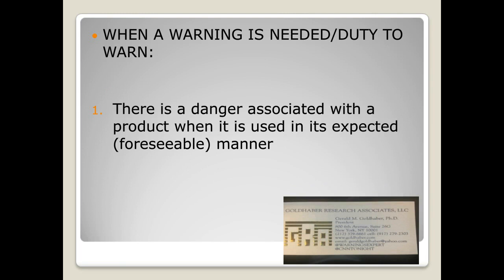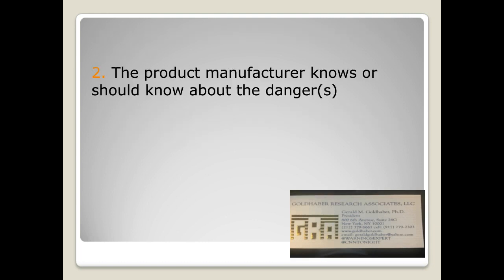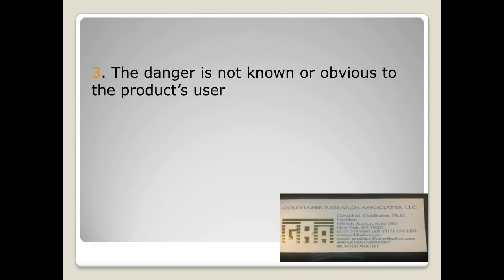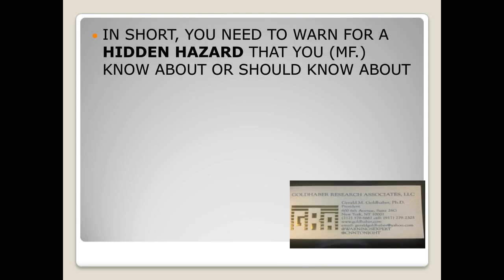A warning is needed when there's a danger associated with a product when it's used in an unexpected manner — we call that foreseeability. That's when you need to warn the public, and the product manufacturer knows or should know about the dangers. However, the public may not know. Simplified: the danger is not known or obvious to the product's user — I call it a hidden hazard. If your client has a hidden hazard, or the injured party claims the hazard was something they did not know about, the manufacturer certainly would or should have known.